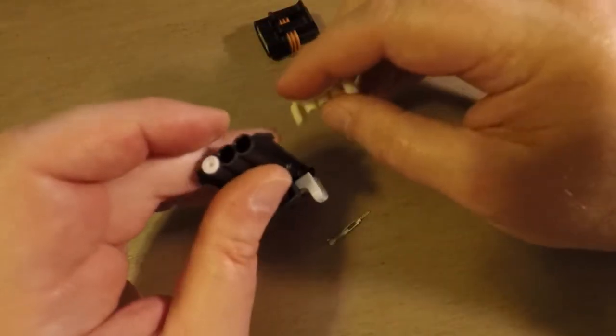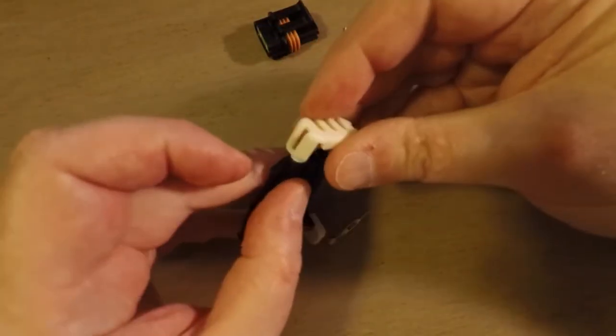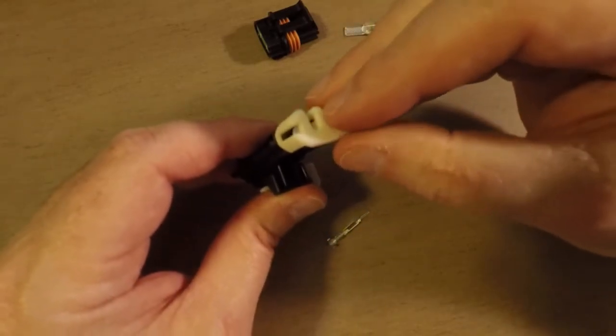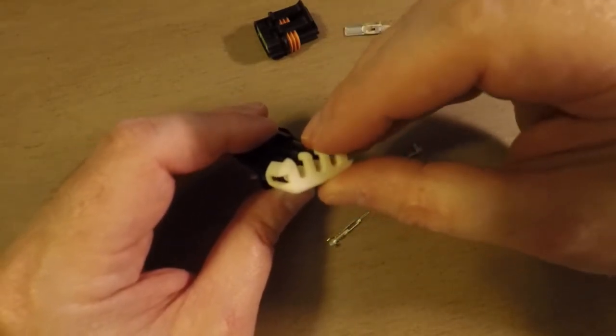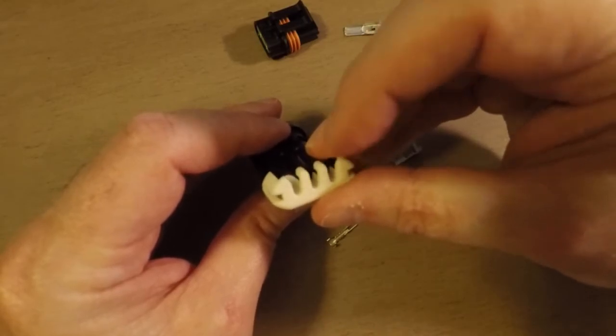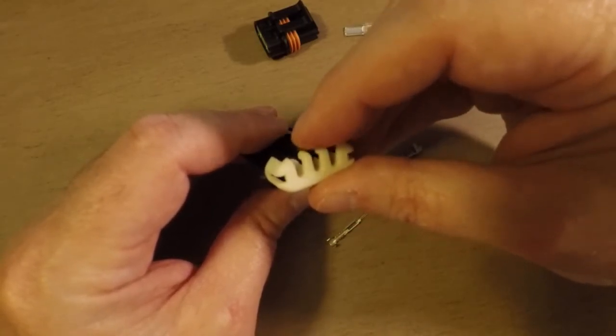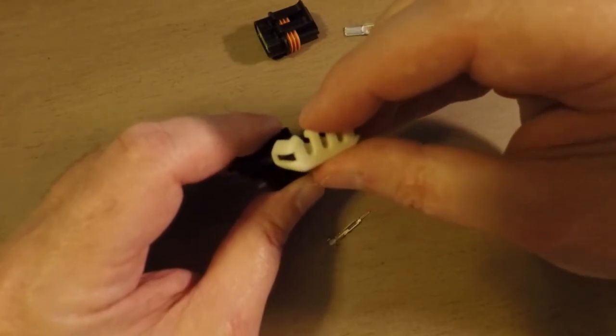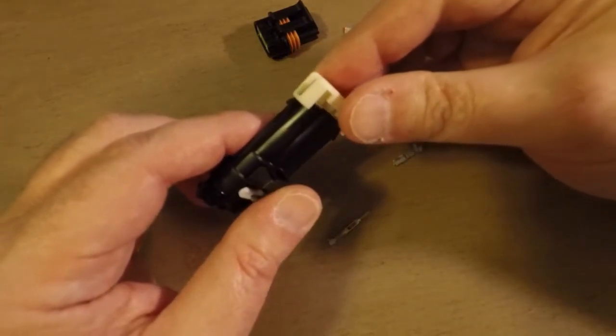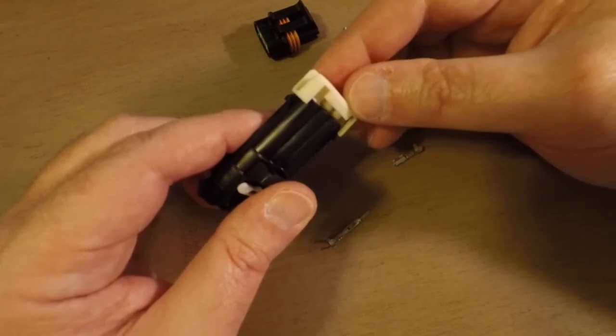There's also a TPA, which is terminal position assurance, that goes on the back side of the connector. And it basically just gives the wires these channels to move through. So it keeps the wires from getting tangled up or twisted around or kinked up. It gives them extra strain and relief. And this goes on the back of the shell like that.